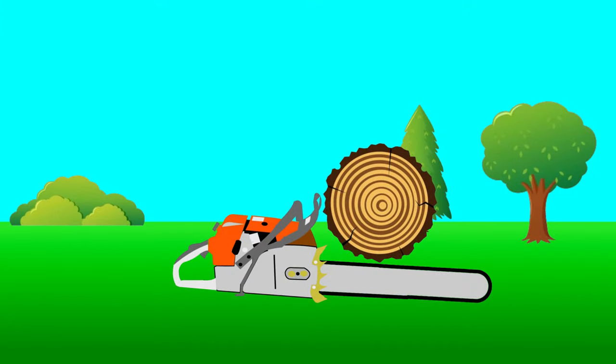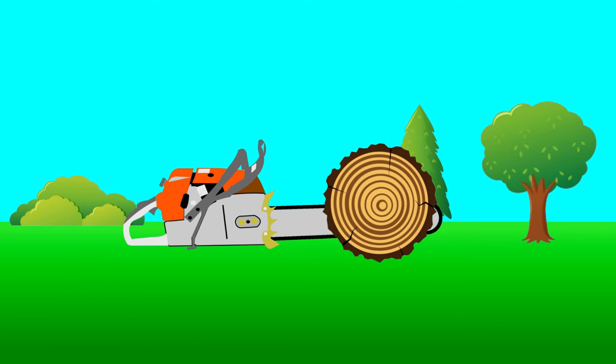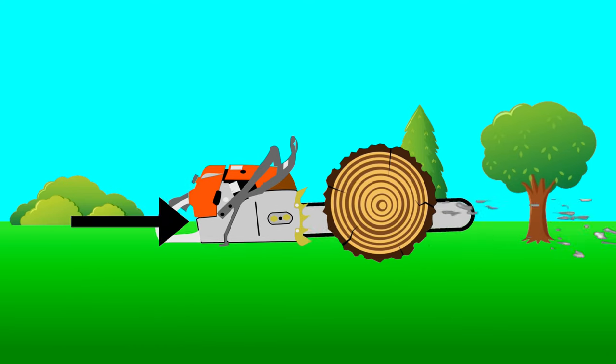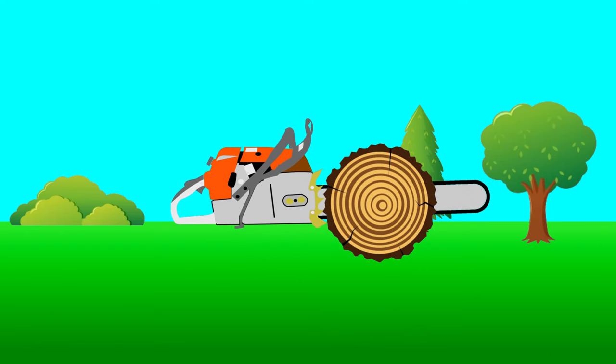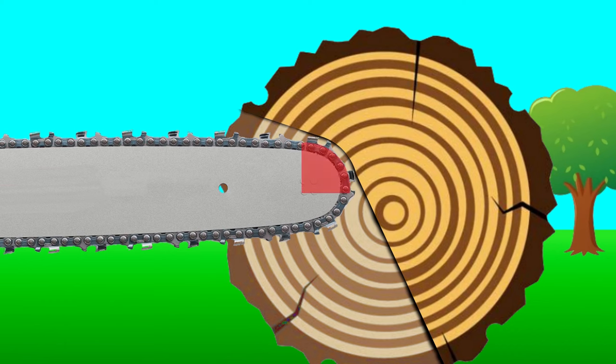When cutting with the top of the bar, the saw tends to push itself back towards the operator. So an equal force must be applied to keep it in place. The danger is, if the saw comes too far back out of the cut, you risk cutting with the danger area at the tip of the bar. When this small area contacts an object, the chain has a tendency to dig in and jam rather than cut, since all the pressure is on a single tooth. When this happens, instead of the chain moving forwards, the entire saw can be thrown upwards and backwards towards the operator.